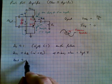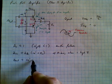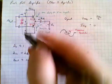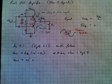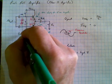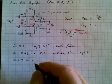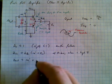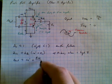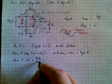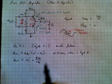So Rout is going to be RE prime plus whatever this network is. We'll just make it R thevenin, some combination of all these things in parallel. R thevenin divided by HFE. So that's the output impedance.